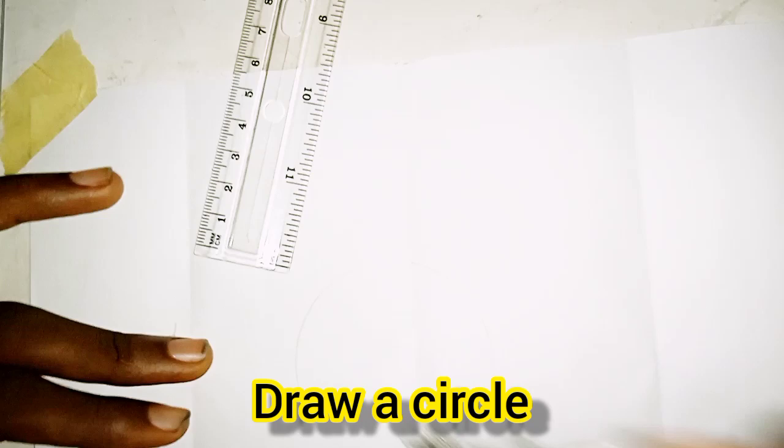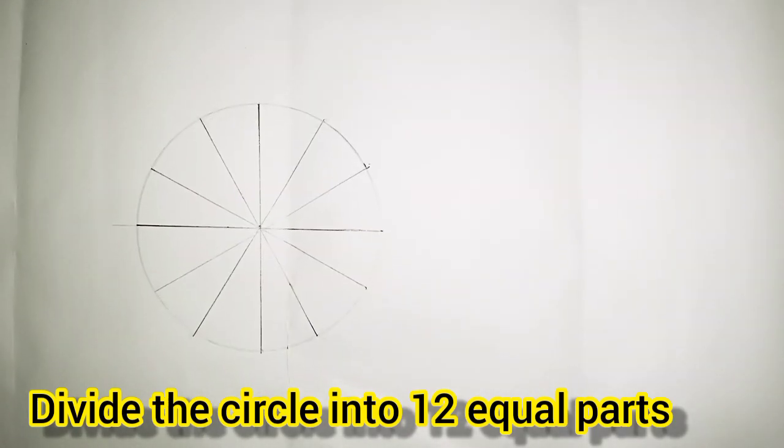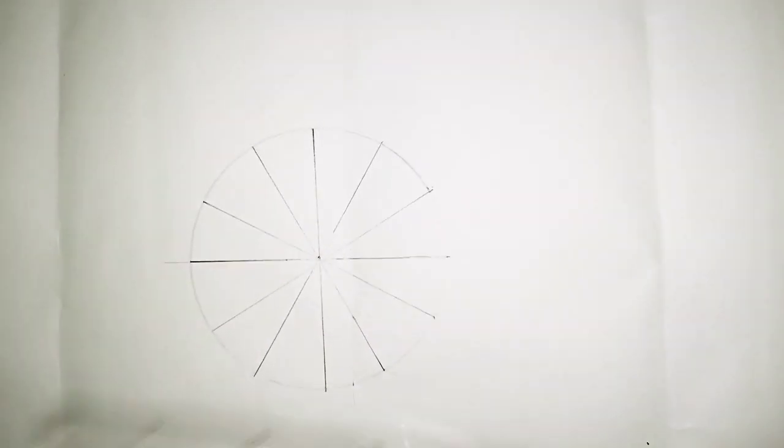30 millimeters. Having done our circle, now we're dividing our circle into 12 equal parts. I've divided my circle into 12 equal parts, so we can start our numbering.